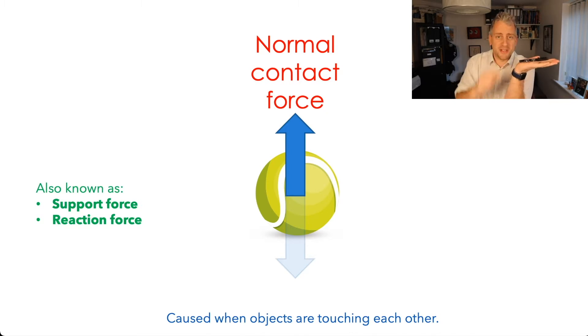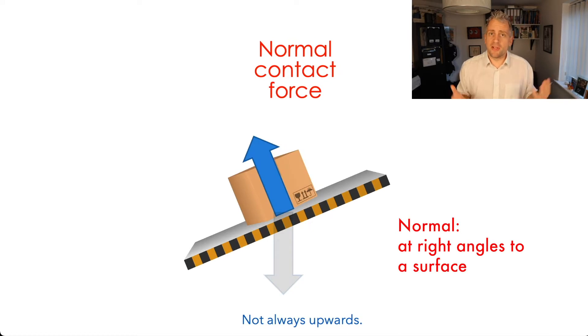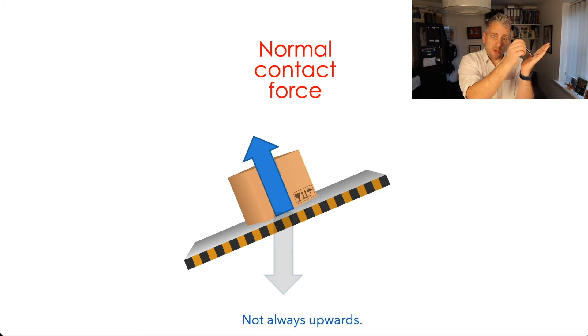Contact because it needs to be touching and normal because of the direction that it acts. It doesn't always act upwards. It always acts perpendicular to the surface that it's touching. So for example if we consider a box here, that box is on a slope where there is still a normal contact force acting at 90 degrees to that slope.